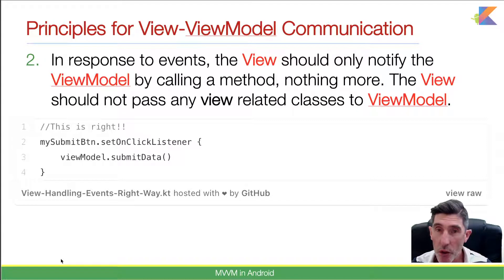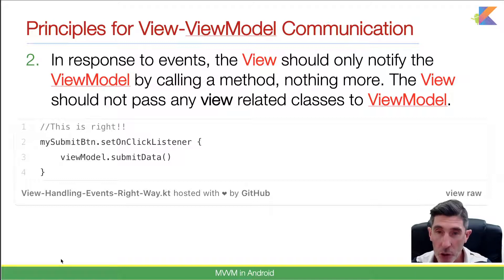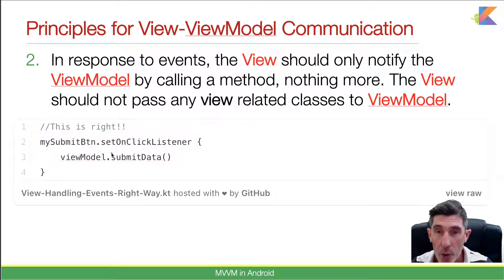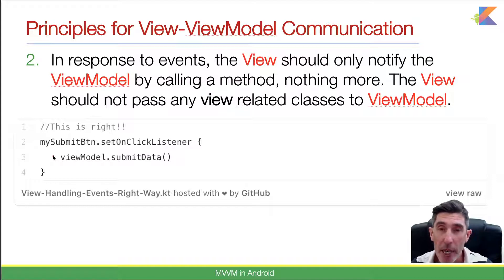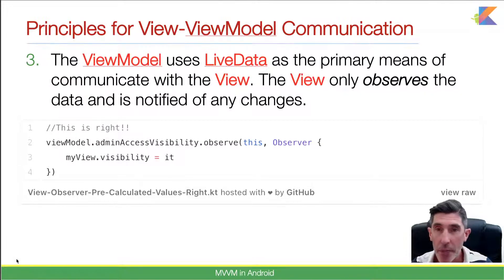In response to events, the View should only notify the ViewModel by calling a method — nothing more. The View should not pass any view-related classes to a ViewModel, as that's where memory leaks occur. In this example, a button on the View has a click listener that simply calls 'submitData' on the ViewModel. Whatever processing happens is inside the ViewModel. Passing information around is done through data binding — the binder element we'll cover shortly.